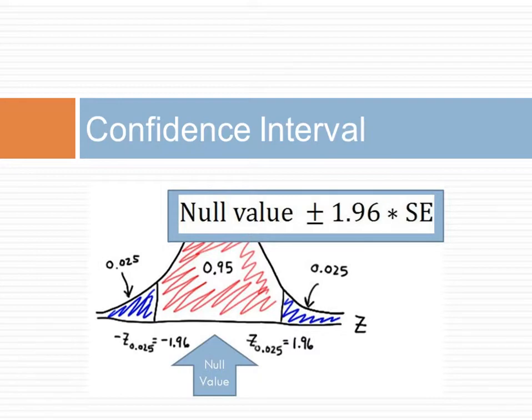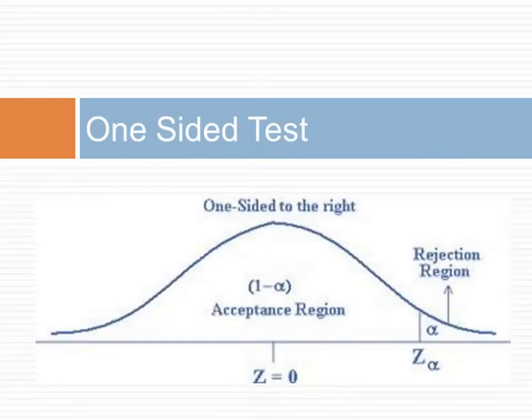If the sample value falls outside of the confidence interval, then the hypothesis is rejected. If the researchers are only interested in showing an increase or a decrease, but not both, use a one-sided test. If the researchers would be interested in any difference from the null value — any increase or decrease — then the test should be two-sided.